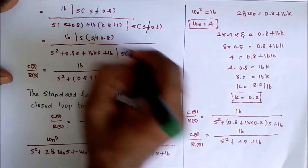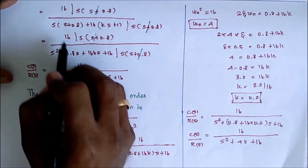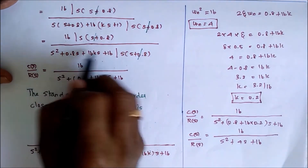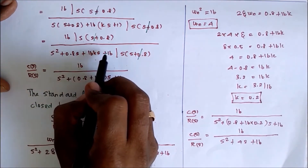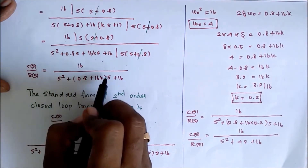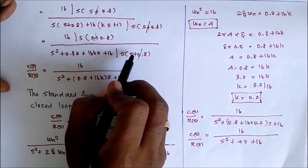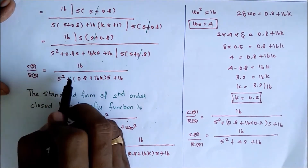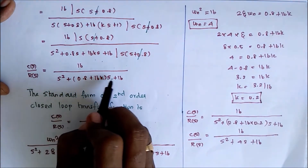Now we multiply inside: S squared plus 0.8S, and 16Ks plus 16. After multiplication, we separate the S squared term, S term, and constant term. There is only one S squared term. For the S terms, we take S outside. After canceling common denominators, we get the transfer function: C(S) divided by R(S) equal to 16 divided by S squared plus 0.8 plus 16K, into S plus 16.